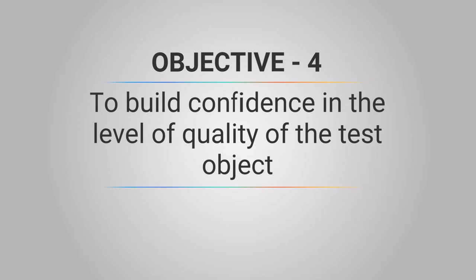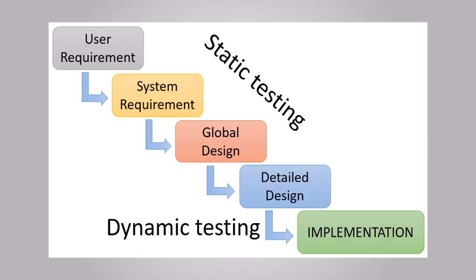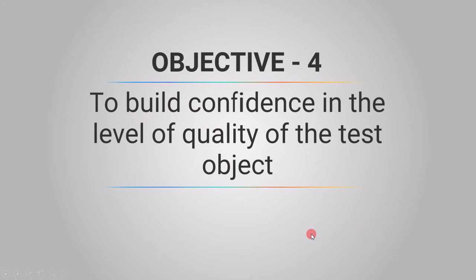The fourth objective is to build confidence in the level of quality of the test object. Suppose we are in the requirement stage — the requirement is our test object. If we clarify our requirement at this stage itself instead of during the implementation stage, we can build confidence in our requirement and finally in our product. We conduct a review after each stage to verify the work product quality.